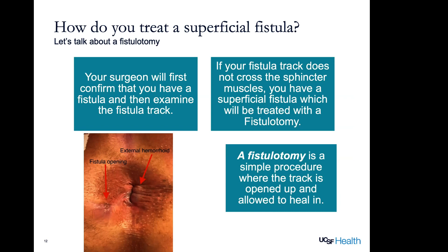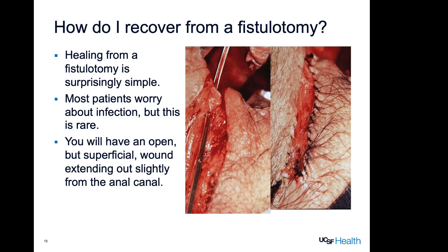In this next slide, we're going to show you some pictures of what that wound is going to look like. You will have an open wound there at the perineum right next to the anal canal where the superficial fistula track was. We open that up because the best way for this to heal is from the bottom up. The doctor is going to put some stitching on the side of the wound bed so that it can heal from the bottom up. Those stitches don't need to be removed. The healing from this is actually surprisingly simple — many patients worry about infection, but that is rare. You will have this open but very superficial wound extending slightly from the anal canal.